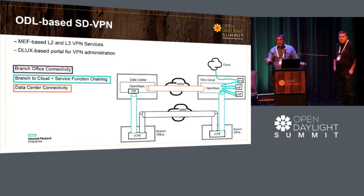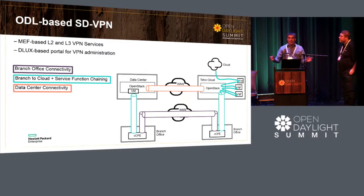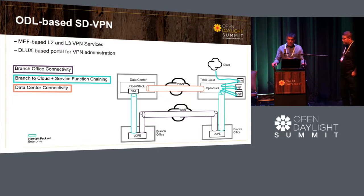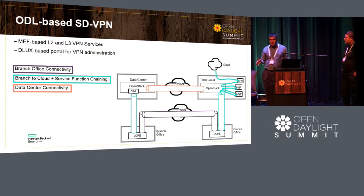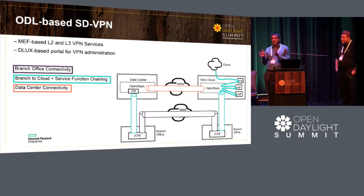ELAN and E3 models from MEF are both supported. ELAN enables direct branch-to-branch connectivity. The uniqueness of the solution when using the NetVirt model is that you can have the branch office connected directly into your OpenStack networking in your tenant.